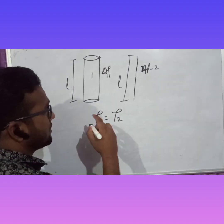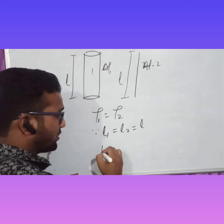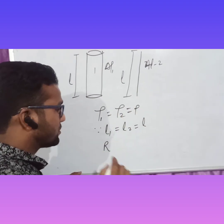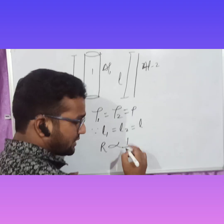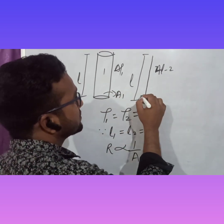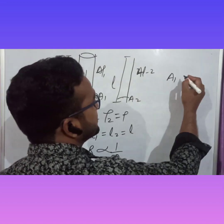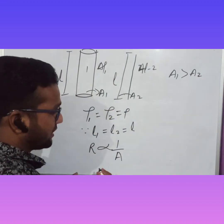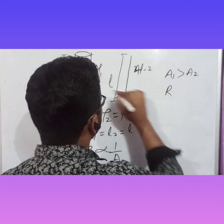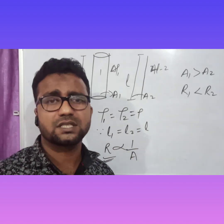Since L1 equals L2 equals L, and using the formula R = ρL/A, both ρ and L are the same for both samples, so R depends only on A. From the figure it is clear that the area of the first material A1 is greater than the area of the second material A2. Since resistance is inversely proportional to area, the resistance of the first material will be less than the resistance of the second material. This is how we can answer any conceptual question.